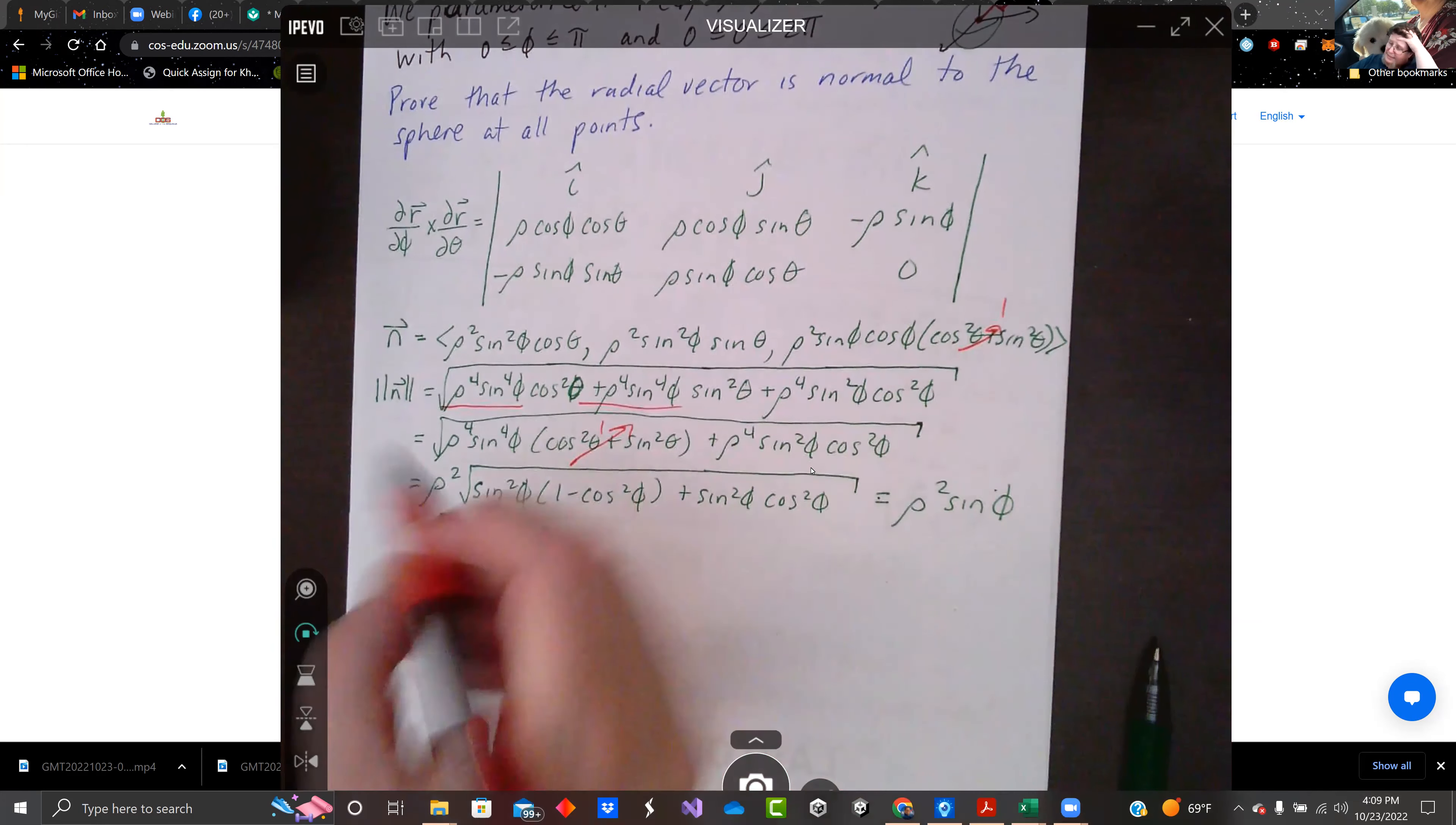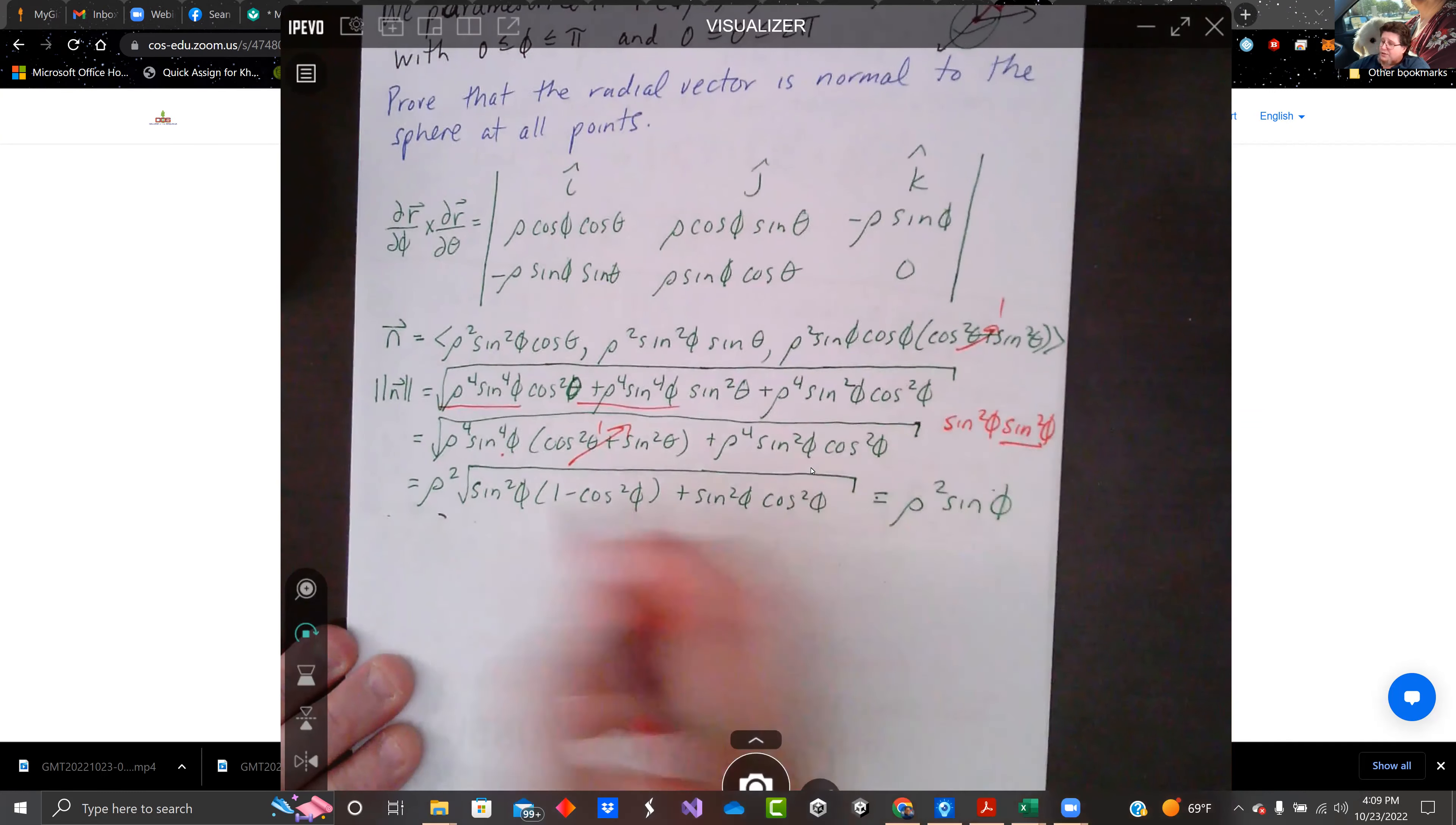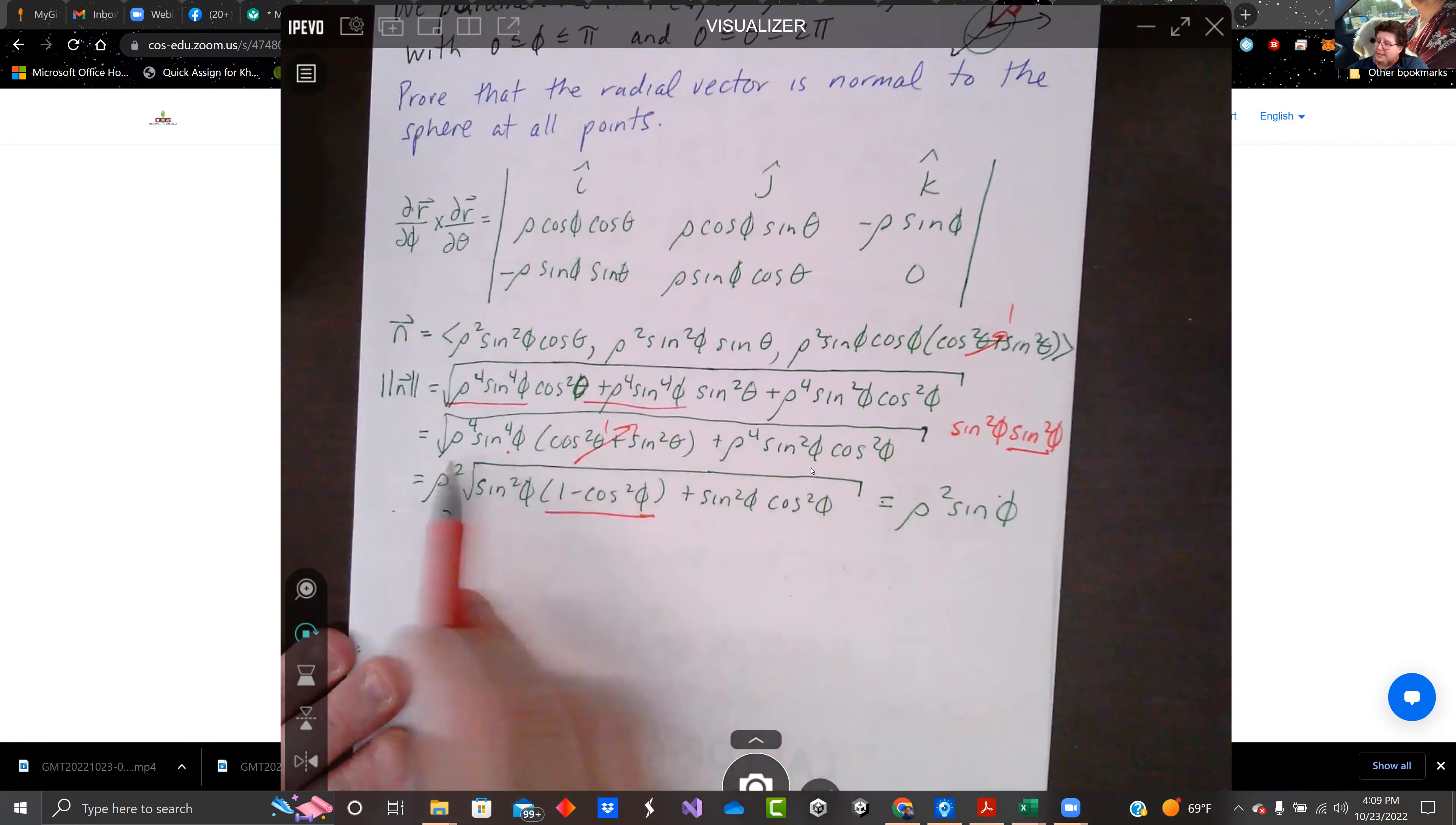We're going to split this sine to the fourth up into sine squared times sine squared. And we're going to convert one of those sine squareds to one minus cosine squared phi. The rho to the fourth I can factor out of both. Take the square root. It's rho squared. I don't need an absolute value because rho squared is already going to be positive.